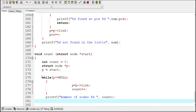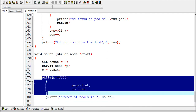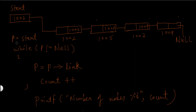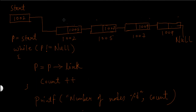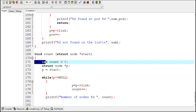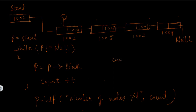This while loop is used to count the number of nodes. Initially p will store the value of start, which is the address of the first node, so p means the first node. The value of count will be 0 initially. This while loop means that as long as the value of p is not equal to null, keep on executing this loop. According to this example, p is not equal to null — p is equal to 1002 — so this while condition is true.